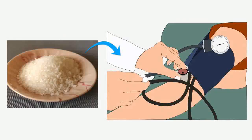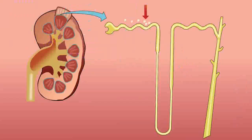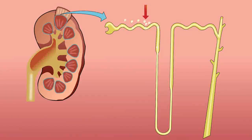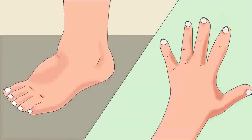Sugar also has an effect on blood pressure. On eating food high in sugar and salt, our sodium level increases. Sugar enhances the sodium absorption in the body by the kidney. As a result, sodium gets retained in the body. This causes an increase in blood pressure and water retention in the body, and puffiness in hands and feet can be seen.